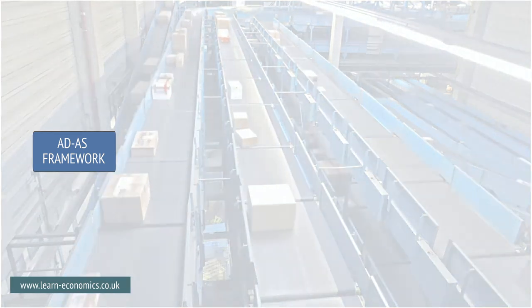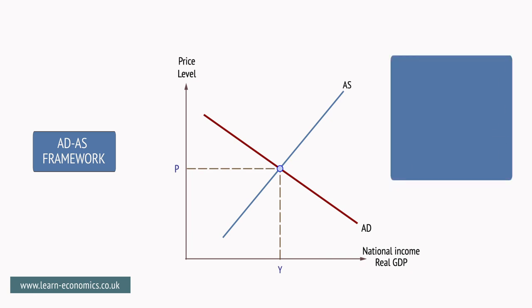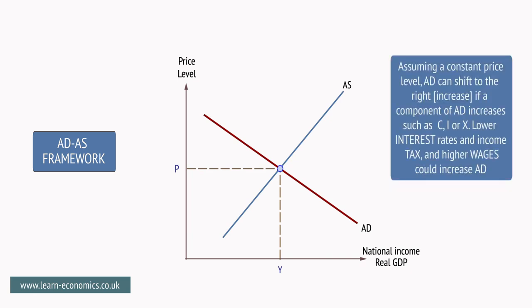National income equilibrium will occur at the price level that equates aggregate demand and short-run aggregate supply. Equilibrium national income, or Y, can change following a change in AD or AS.